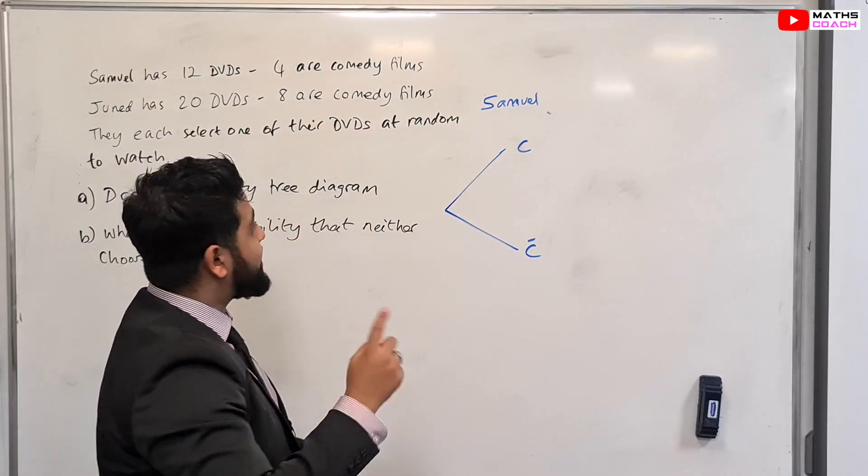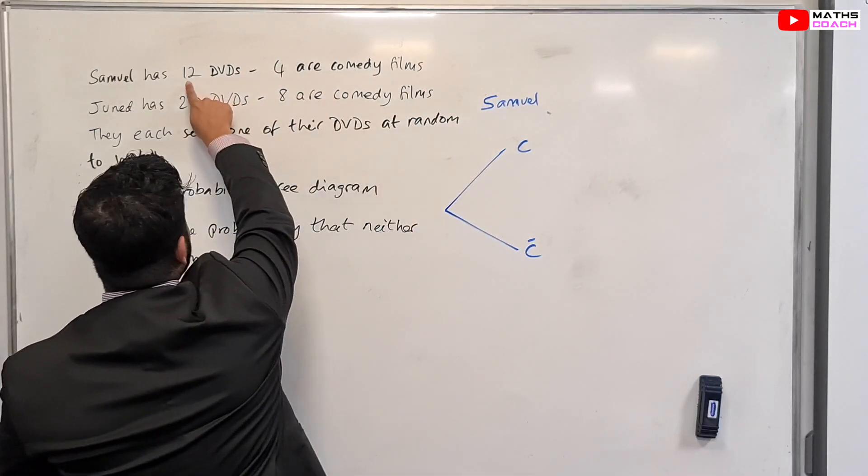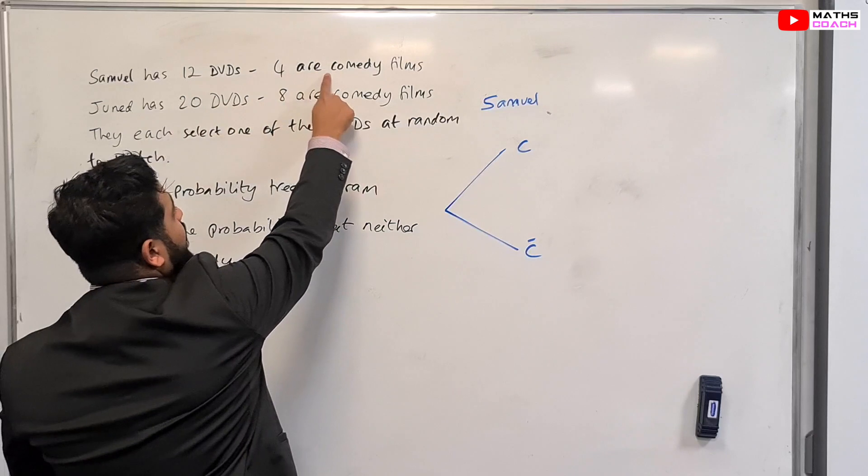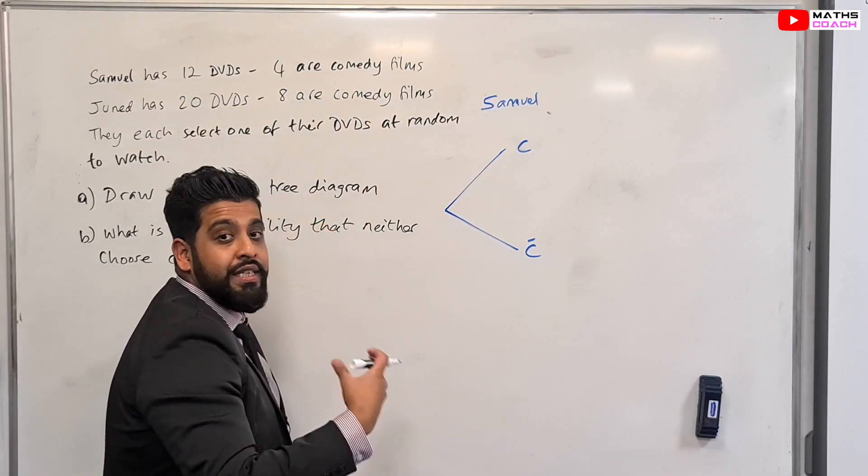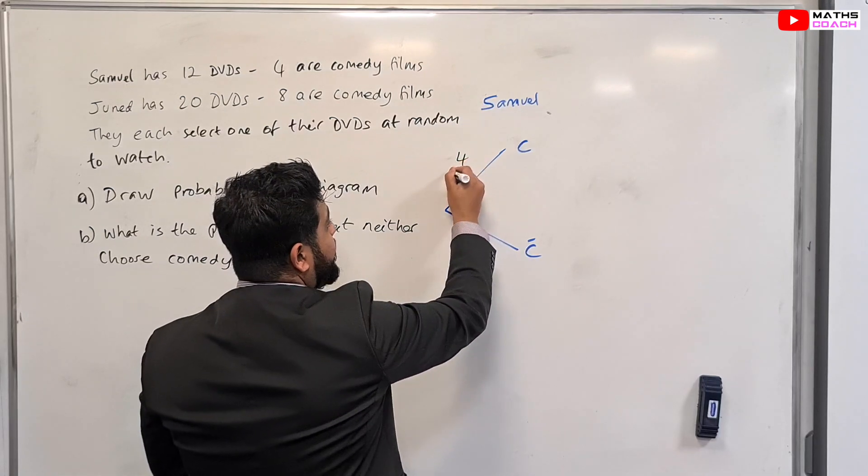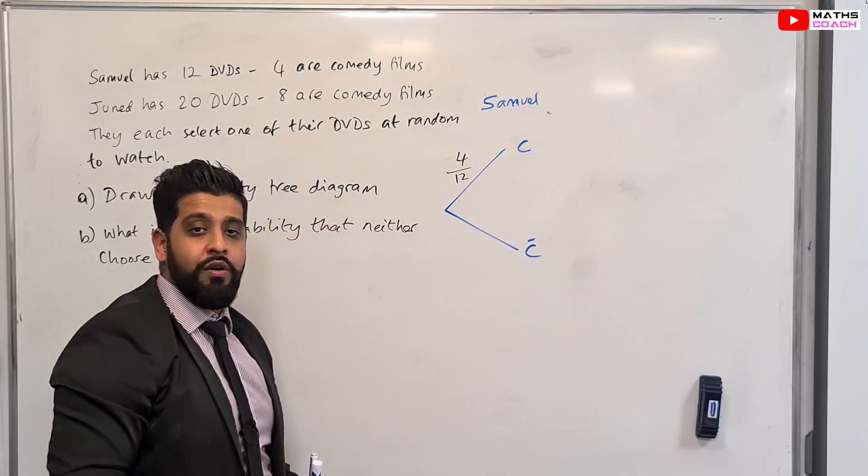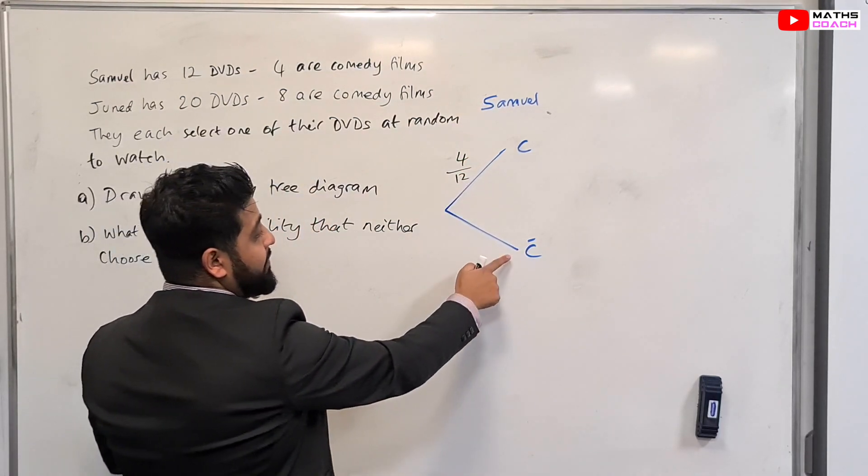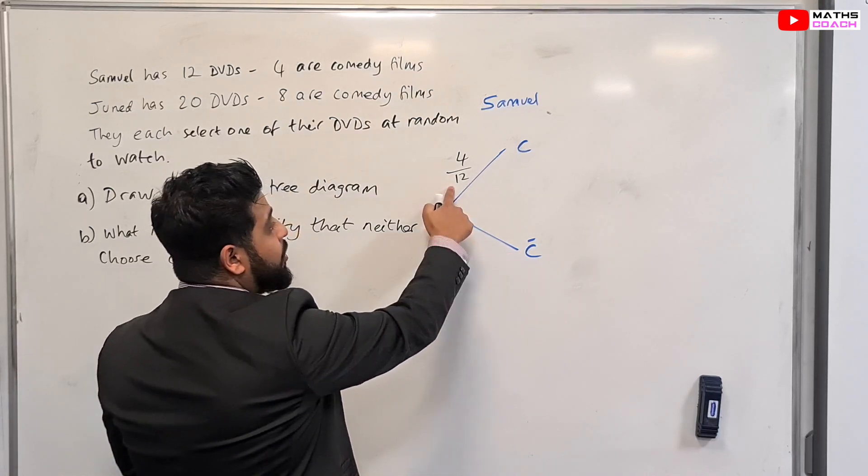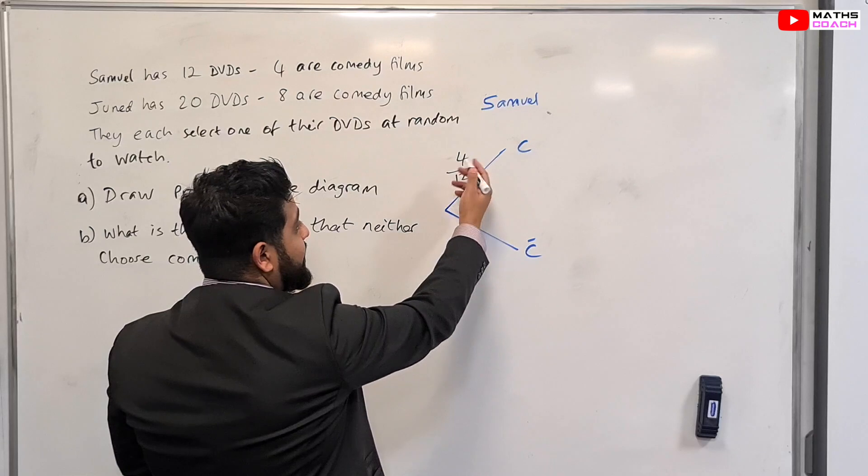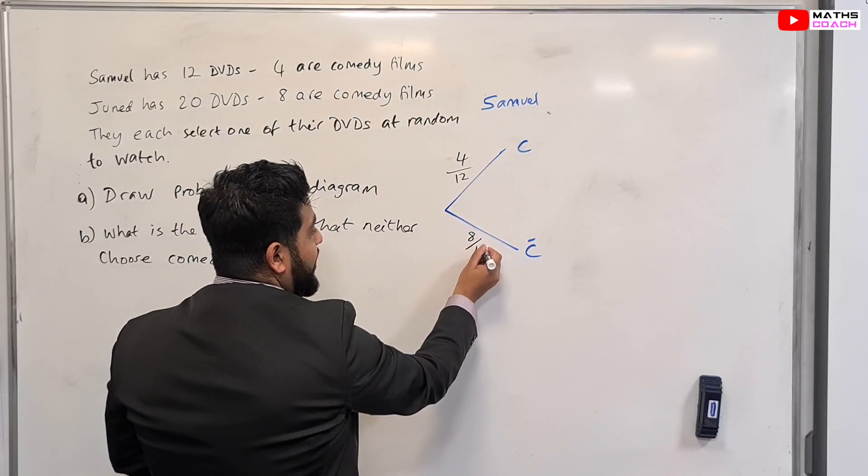Now what is the probability of Samuel choosing comedy? Now Samuel has 12 DVDs, four of them are comedy. So the probability of a comedy DVD that he selects is going to be four out of 12. And the probability of Samuel choosing a DVD which is not a comedy is going to be whatever is left. So in this case it's going to be eight out of 12.